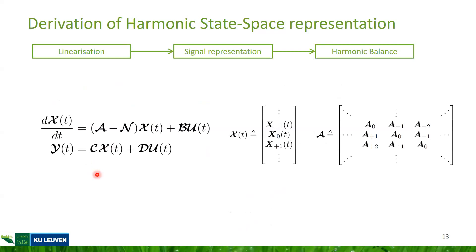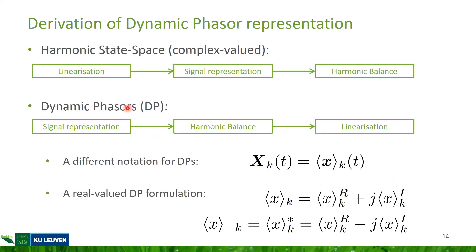The state space coefficients do not depend on time anymore. The system is represented in a compact matrix form where states, vectors, and matrices have infinite dimensions. In particular, the matrices have a special block-Toeplitz structure, meaning the same block elements appear on the diagonals. The new state matrix has an additional term containing the jkω terms coming from the time derivatives of the states. The derivation for dynamic phasor models follows the exact same steps but starts with the change of signal representation, then harmonic balance is applied, followed by linearization. This also results in a linear time invariant system.